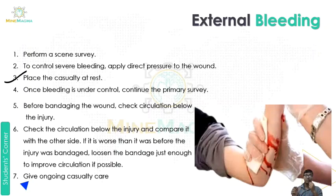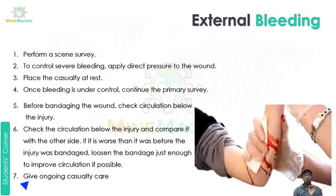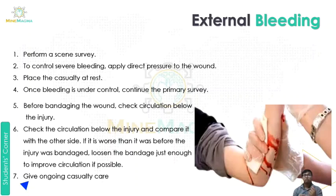Third, place the casualty at rest. Fourth, once bleeding is under control, continue the primary survey. In external bleeding the priority order differs from other emergencies — first we control the bleeding by applying direct pressure, then we do the primary survey, and then call for emergency help. Fifth, before bandaging the wound, check circulation below the injury. We look at the surrounding area to ensure blood circulation is proper.